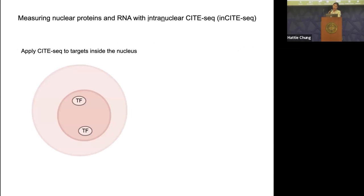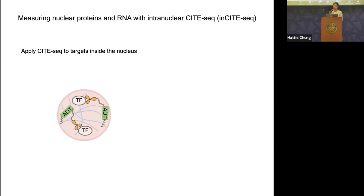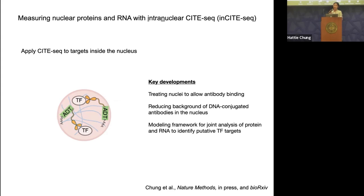Our approach: extract nuclei from a cell and crosslink and permeabilize the nuclear membrane so that DNA-conjugated antibodies can penetrate and attach to transcription factor targets with high specificity. In principle this is simple, but as Peter alluded to, it is actually quite challenging technically, as the nucleus is a site of high nonspecific binding by DNA-conjugated antibodies. We developed an approach to address this, with a preprint available on bioRxiv.